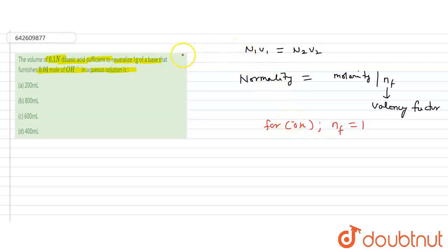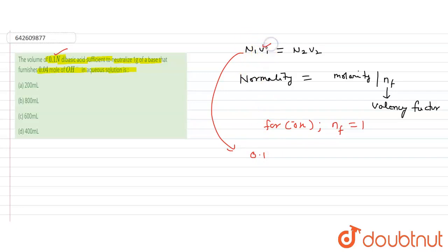We have 0.1 normal dibasic acid, and we need to find the volume V₁ to neutralize one gram of base. Using N₁V₁ = N₂V₂, we need to determine the normality of the base on the other side of the equation.